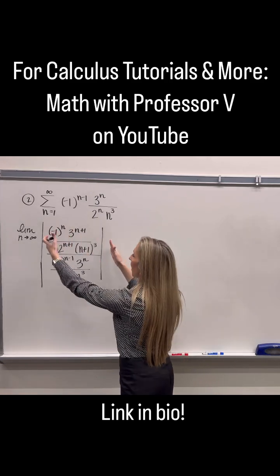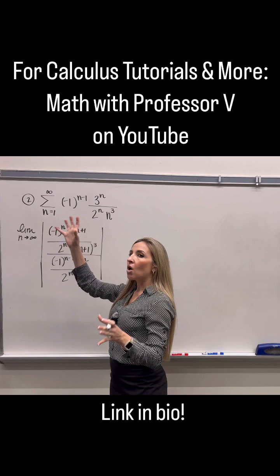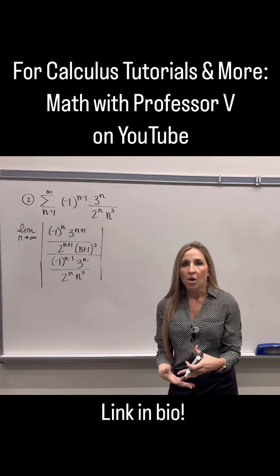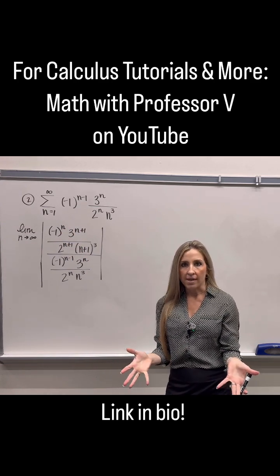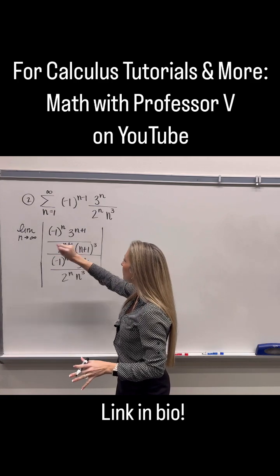Well, when we take this absolute value, it makes all of these negative 1s positive 1s. So then they play no role in the limit. So basically, you can dump them.